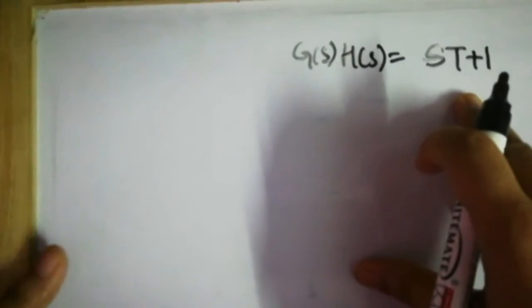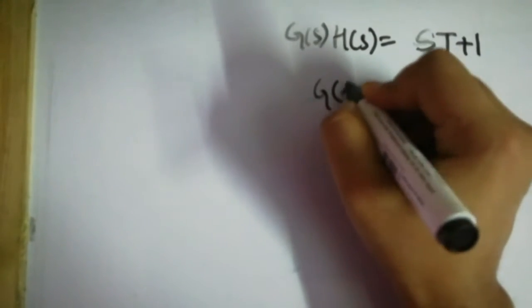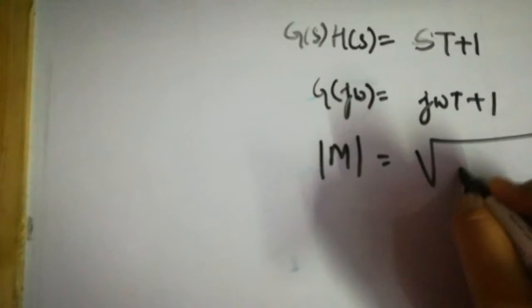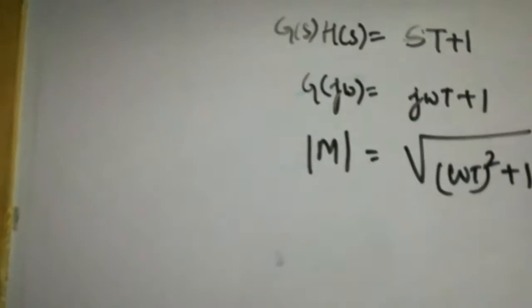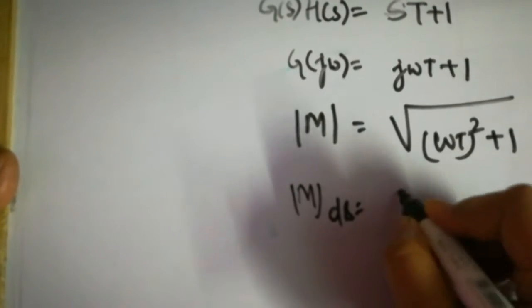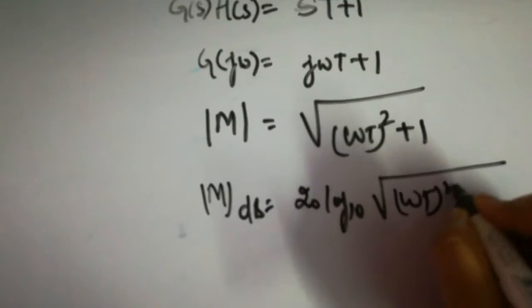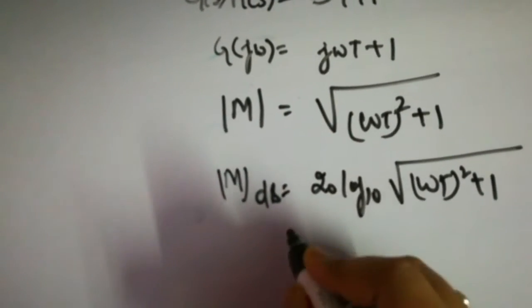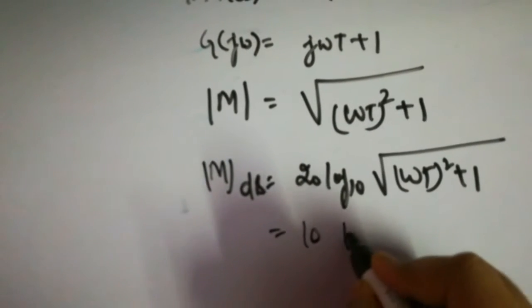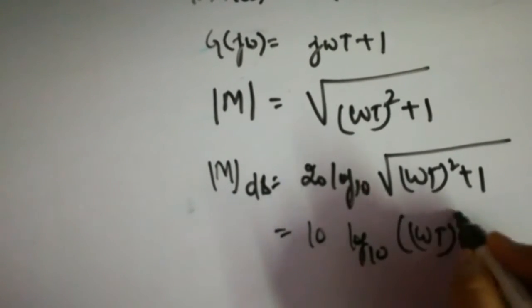Hello guys. This video is about making a Bode plot of a transfer function (sT + 1), as discussed in our previous video. We substitute s with jω, giving us (jωT + 1). We take the magnitude: for a + jb form, the magnitude squared gives (ωT)² + 1. In dB, this becomes 20·log₁₀√((ωT)² + 1), which simplifies to 10·log₁₀((ωT)² + 1).